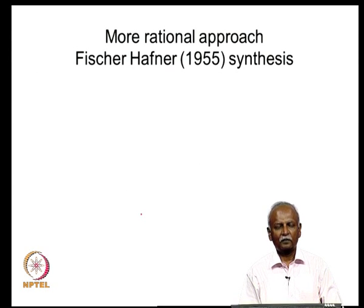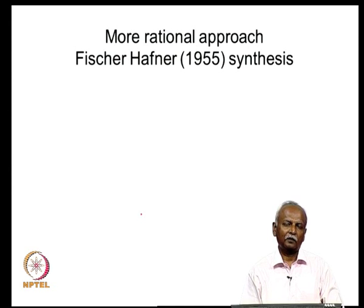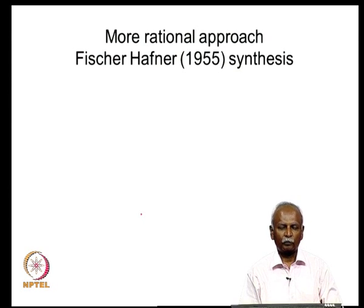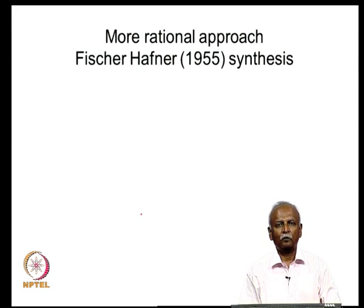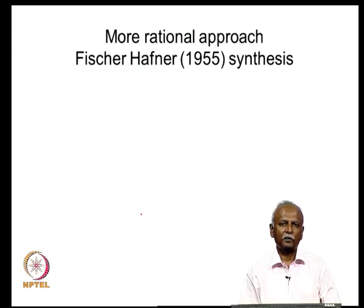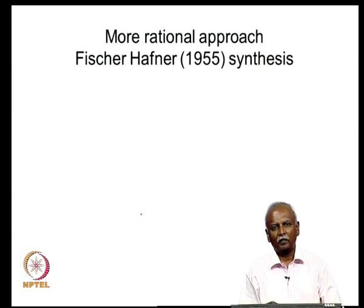A more rational synthesis emerged after the synthesis of ferrocene and analysis of its structure. Fischer realized that it should be possible to make metal complexes where a benzene ring would be used instead of the cyclopentadienyl anion, which is aromatic and has six pi electrons. The cyclopentadienyl anion and the benzene ring should be isolobal or similar enough to replace one another.